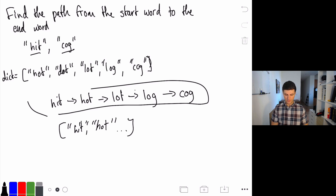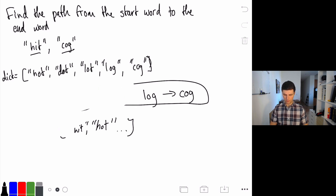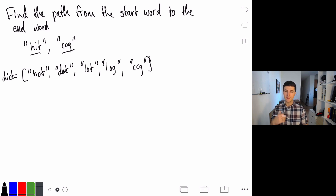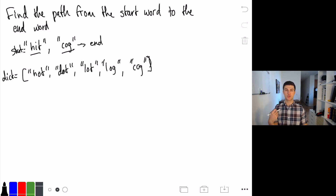As always, we want to make sure we're clear on what the problem definition is, because we want to clearly understand what it is we're actually being asked to do. Specifically, we are looking for the shortest path from the start word to the end word, and we actually want the path itself. So we're going to return a list of strings that represent the path from the beginning to the end.